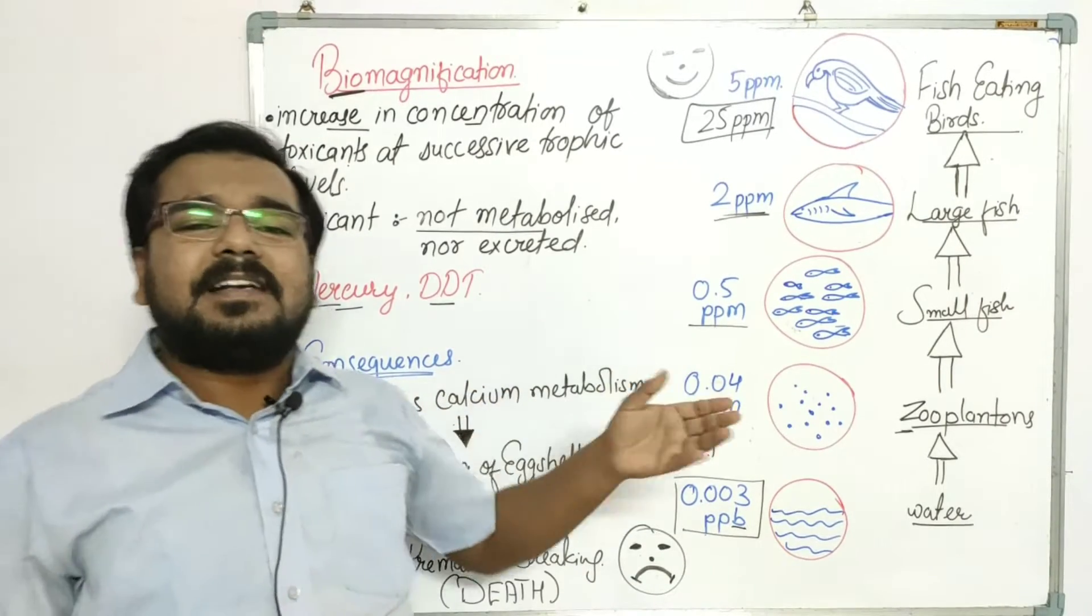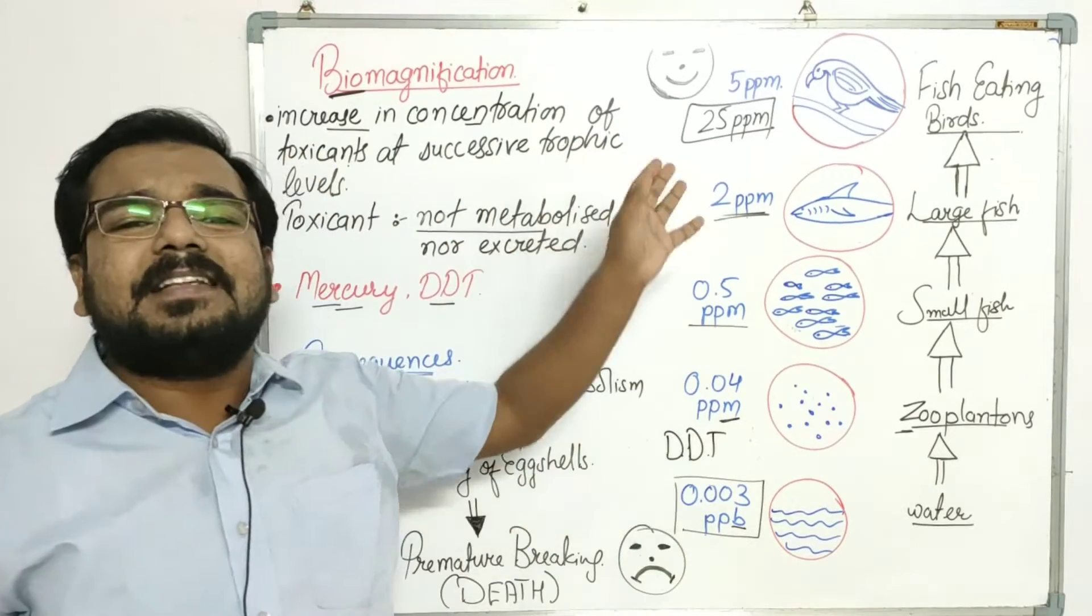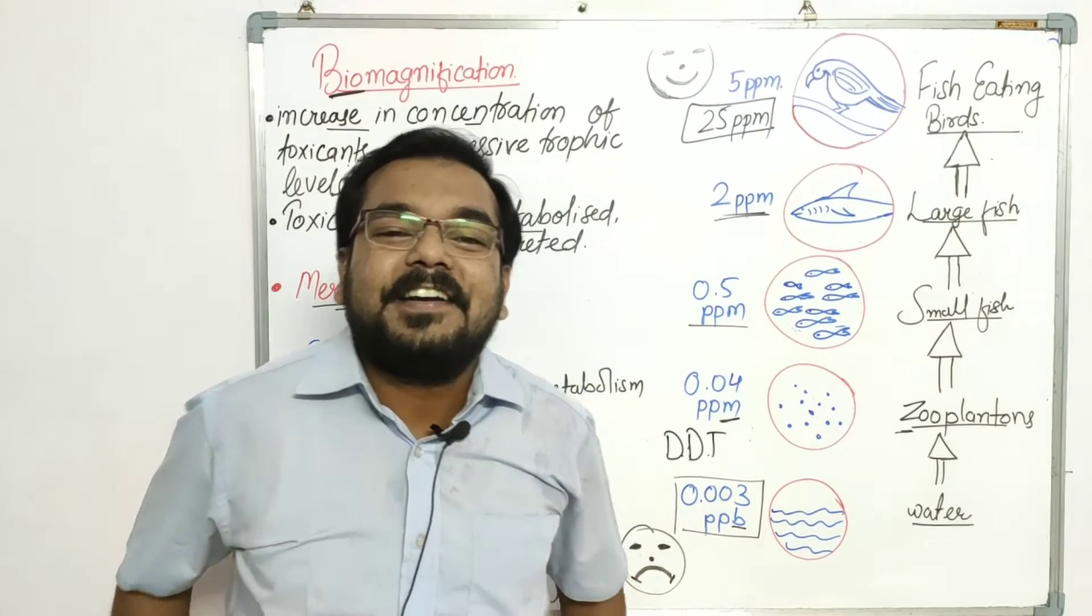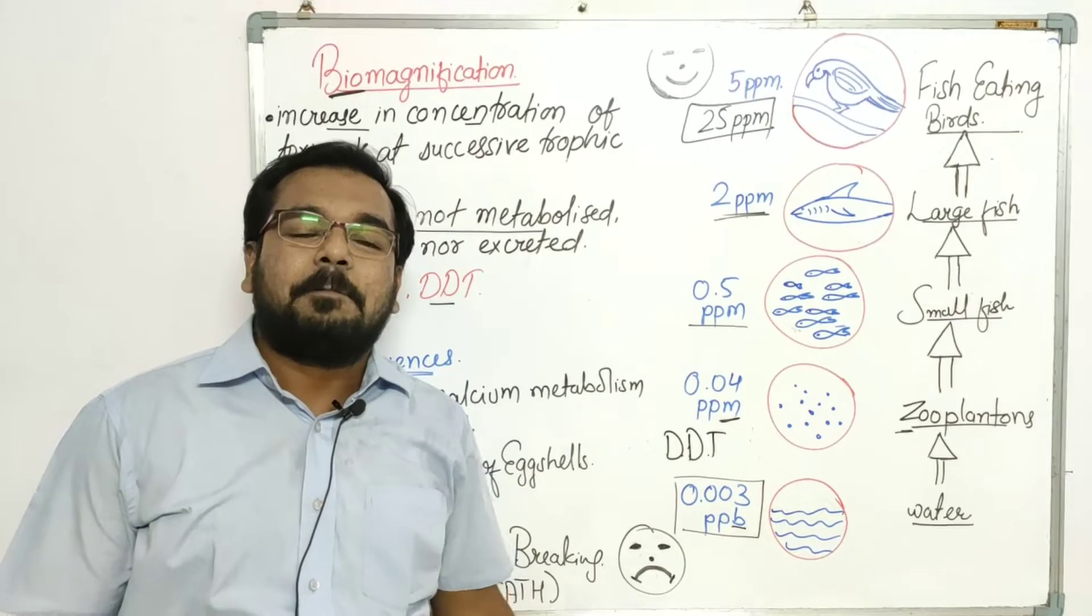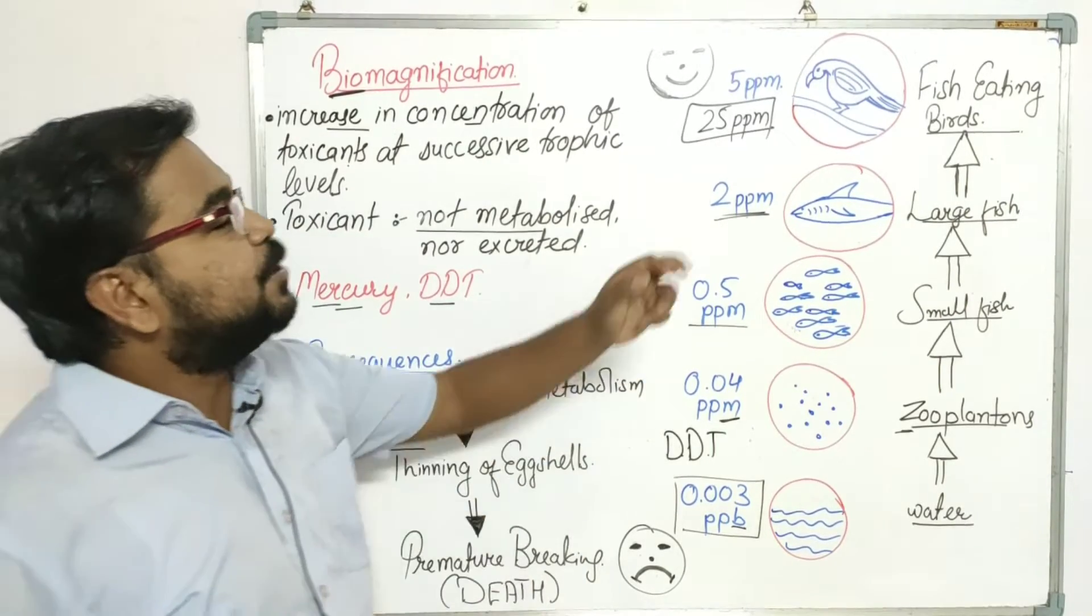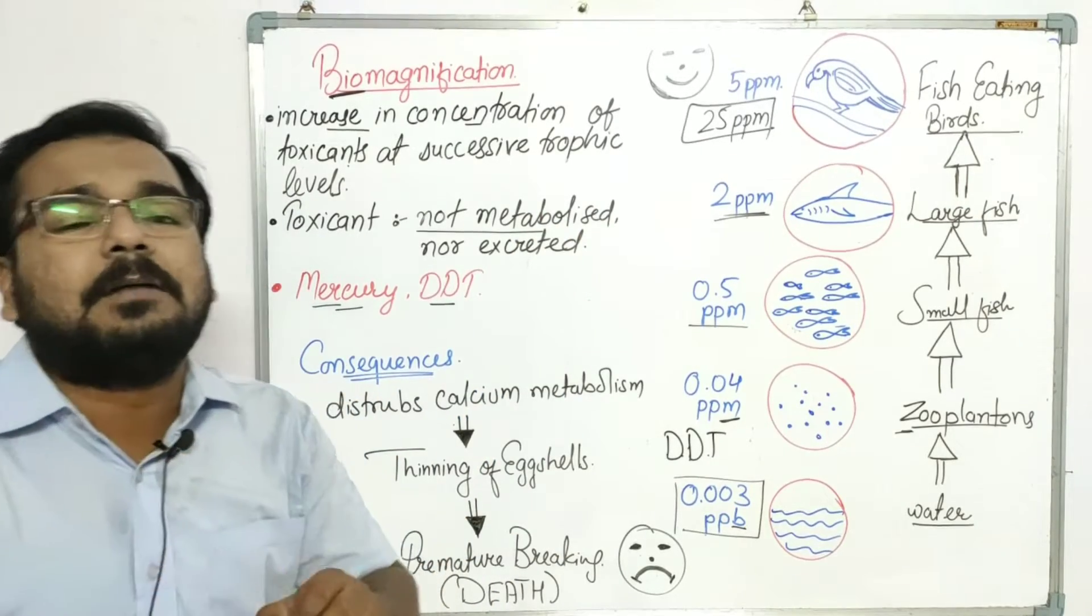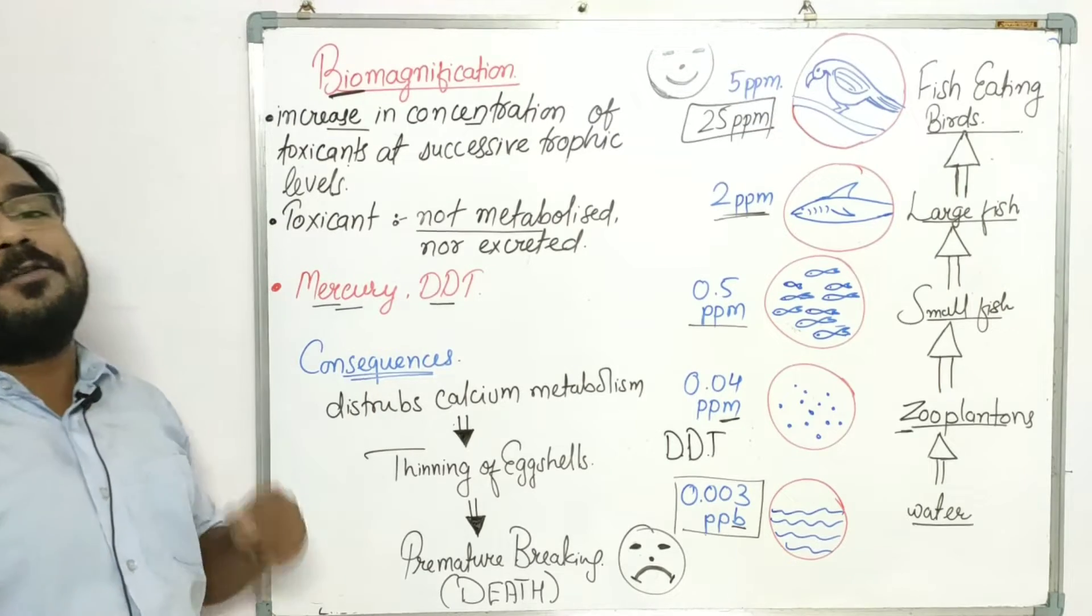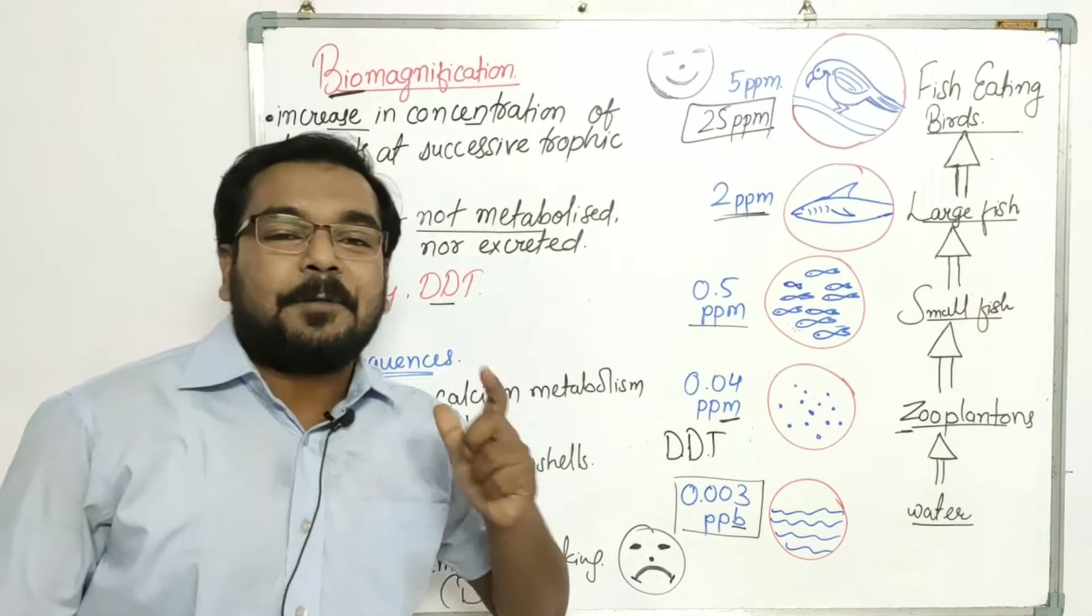What is the damage of DDT? What is the damage? If it is going to the birds, what will be the damage? There is some damage mentioned in the book. What is the damage? This DDT disturbs the calcium metabolism of the birds. What are the consequences of this? It disturbs the calcium metabolism in the birds.